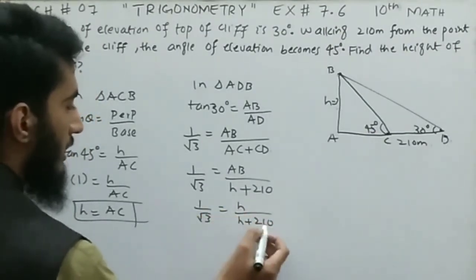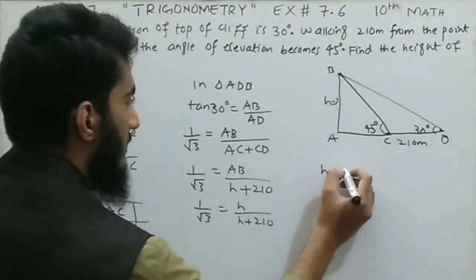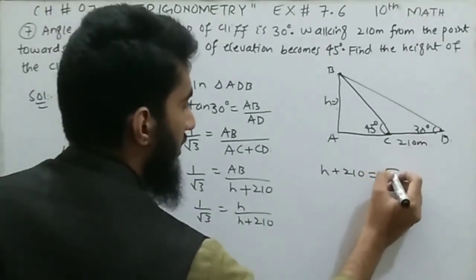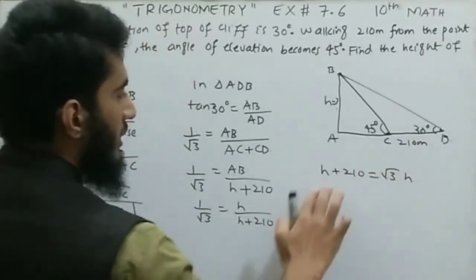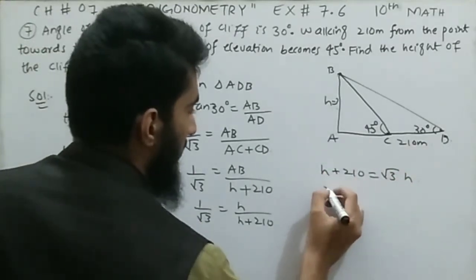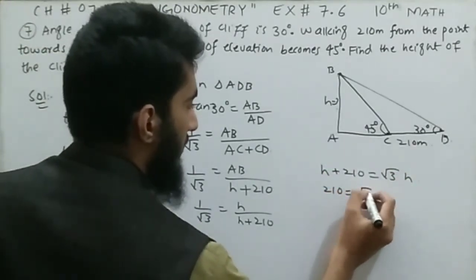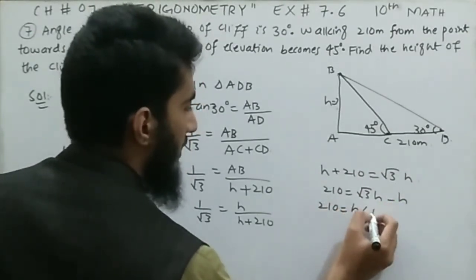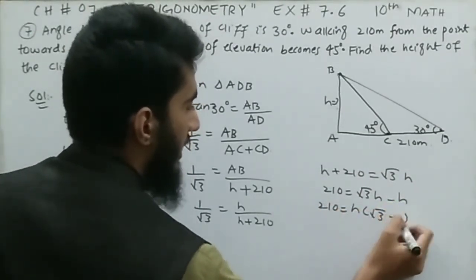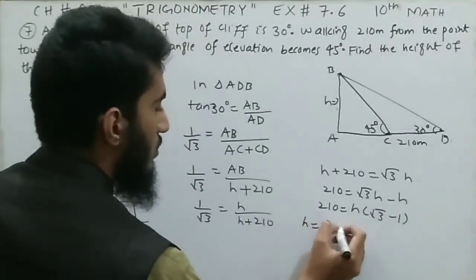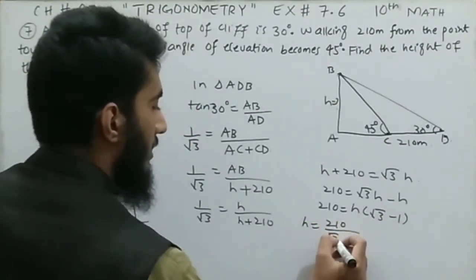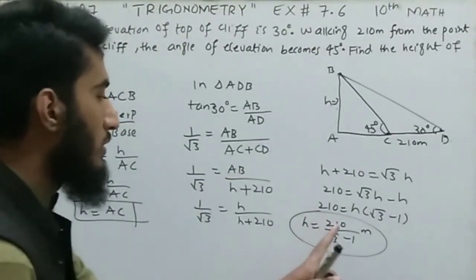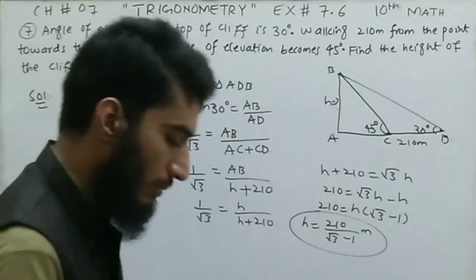By cross multiplication: H + 10 equals √3 × H. Shifting H to the right: 10 equals √3·H − H. Taking H common: 10 equals H(√3 − 1). So H equals 10 divided by (√3 − 1) meters. This is the required vertical height of the cliff.